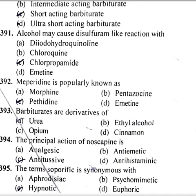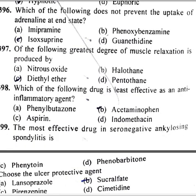Meperidine is popularly known as pethidine. Barbiturates are derivatives of urea. The principal action of noscapine is antitussive. The term soporifics is synonymous with hypnotic. Which of the following does not prevent the uptake of adrenaline at nerve endings? Isoprenaline. Of the following, the greatest degree of muscle relaxation is produced by diethyl ether.